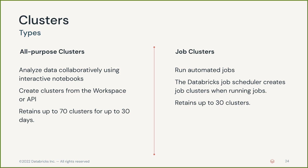For job clusters, configuration info is retained for up to 30 clusters recently terminated by the job scheduler. For all-purpose clusters, configuration info is retained for up to 70 clusters terminated within the last 30 days. To retain information beyond this period, an administrator must pin the cluster.